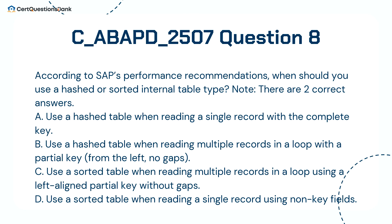According to SAP's performance recommendations, when should you use a hashed or sorted internal table type? Note, there are two correct answers. A. Use a hashed table when reading a single record with the complete key. B. Use a hashed table when reading multiple records in a loop with a partial key (from the left, no gaps). C. Use a sorted table when reading multiple records in a loop using a left-aligned partial key without gaps. D. Use a sorted table when reading a single record using non-key fields.